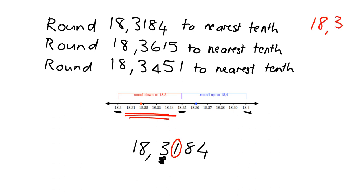Let's do the same with the next one. We've got 18.3615, rounding to the nearest tenth. Again, we've got this picture of lying between 18.3 and 18.4. We look at the number just to the right of the tenths digit to decide whether it's above or below. Well, it's a 6, so obviously it's lying somewhere above, and so it will be rounded up to 18.4.